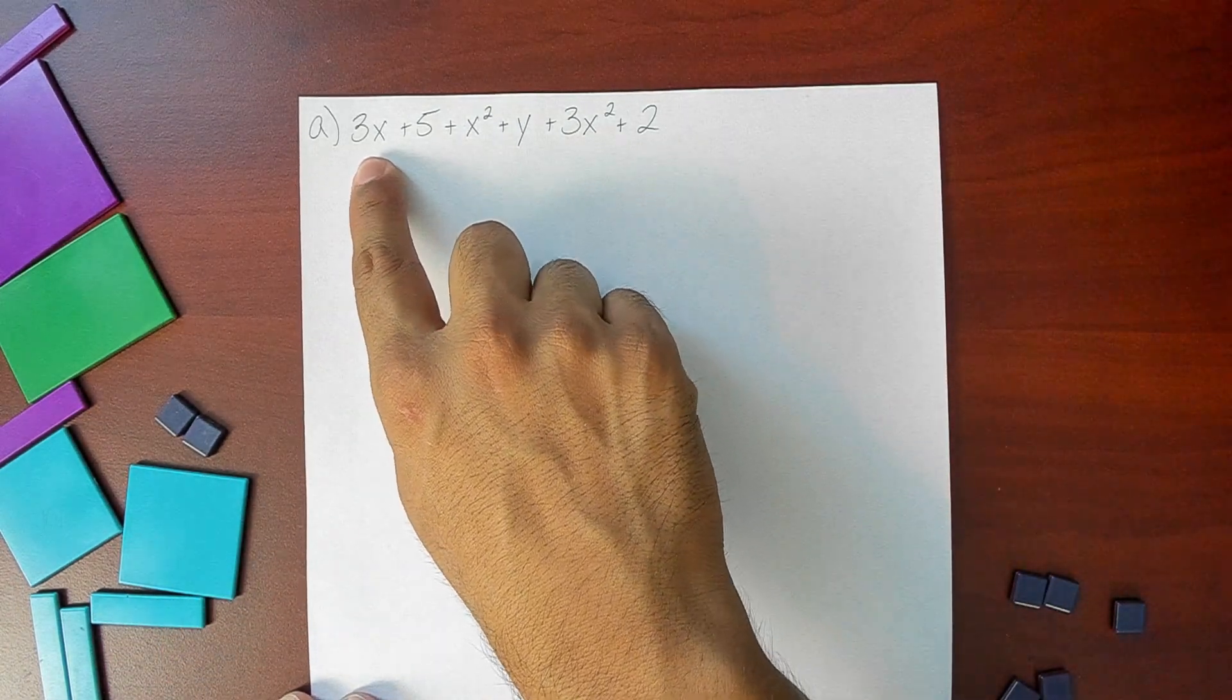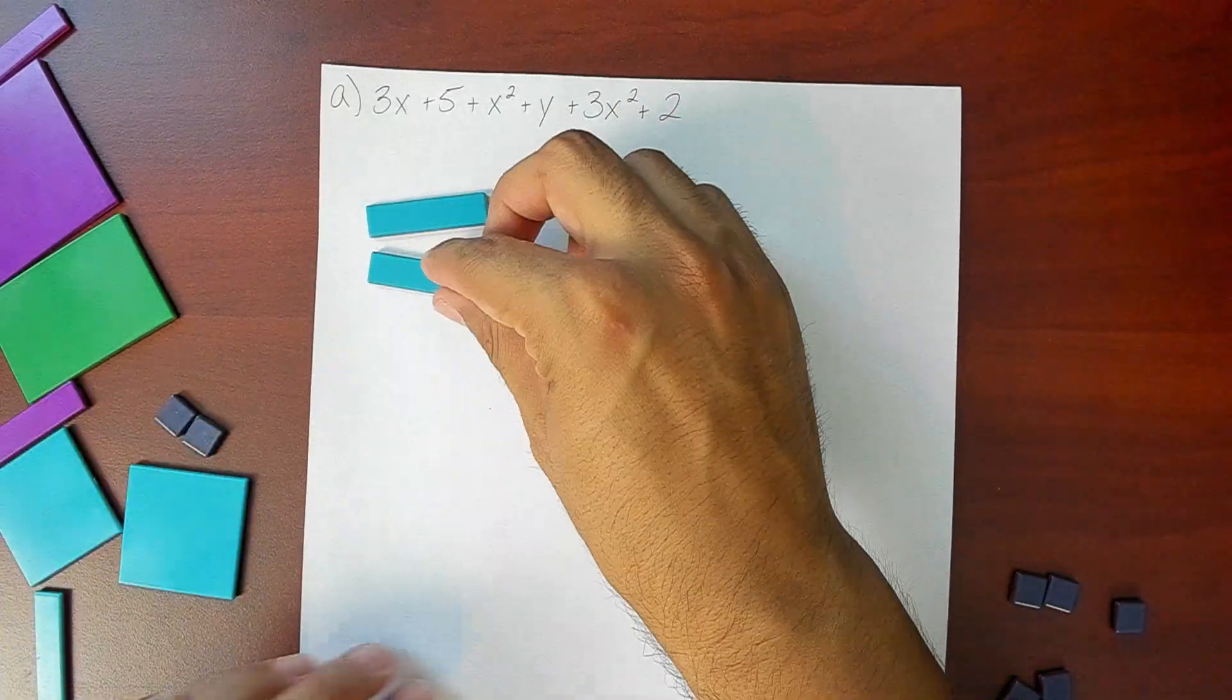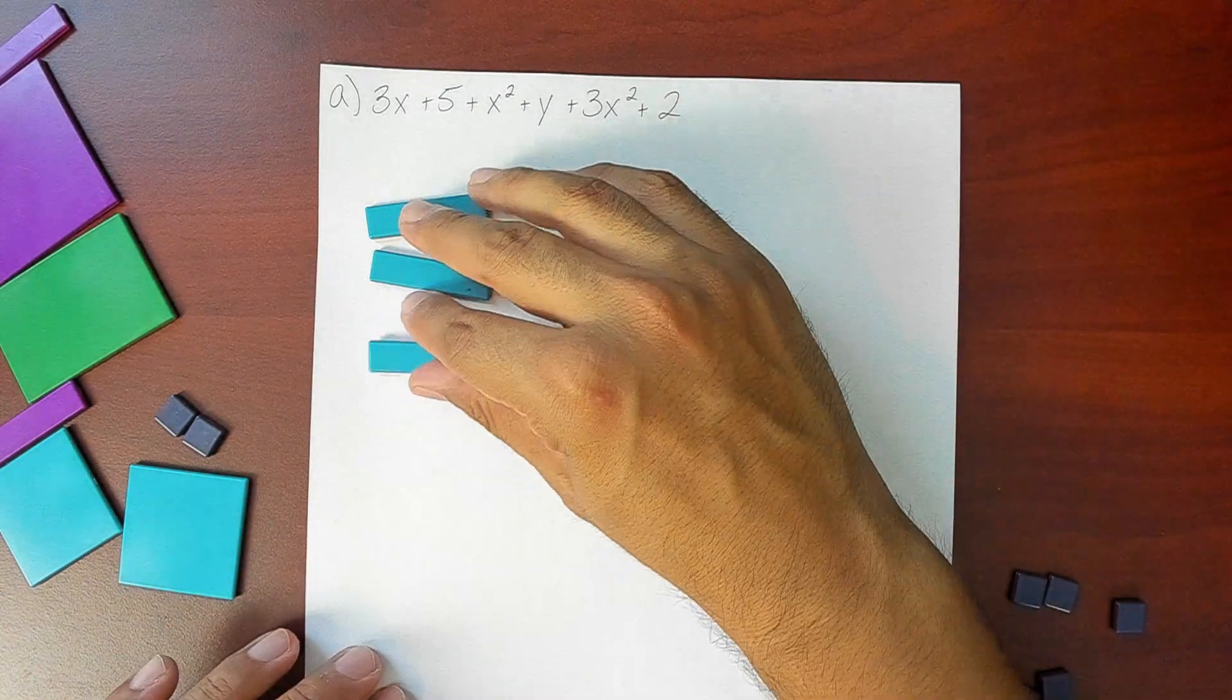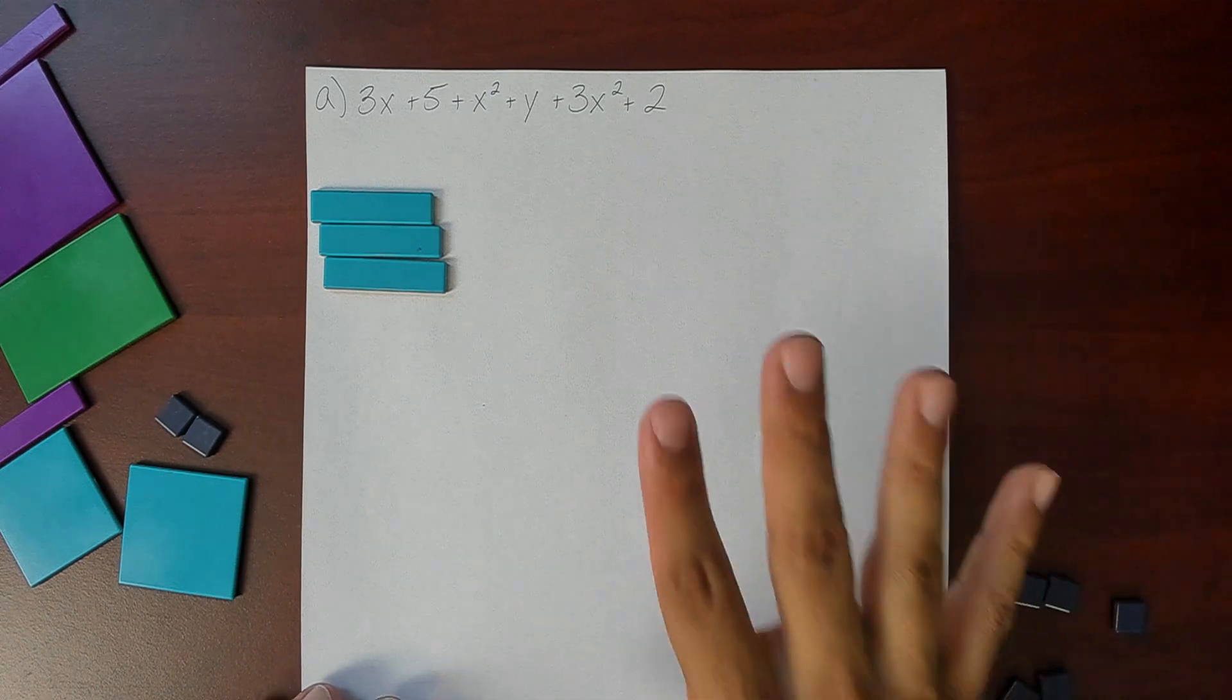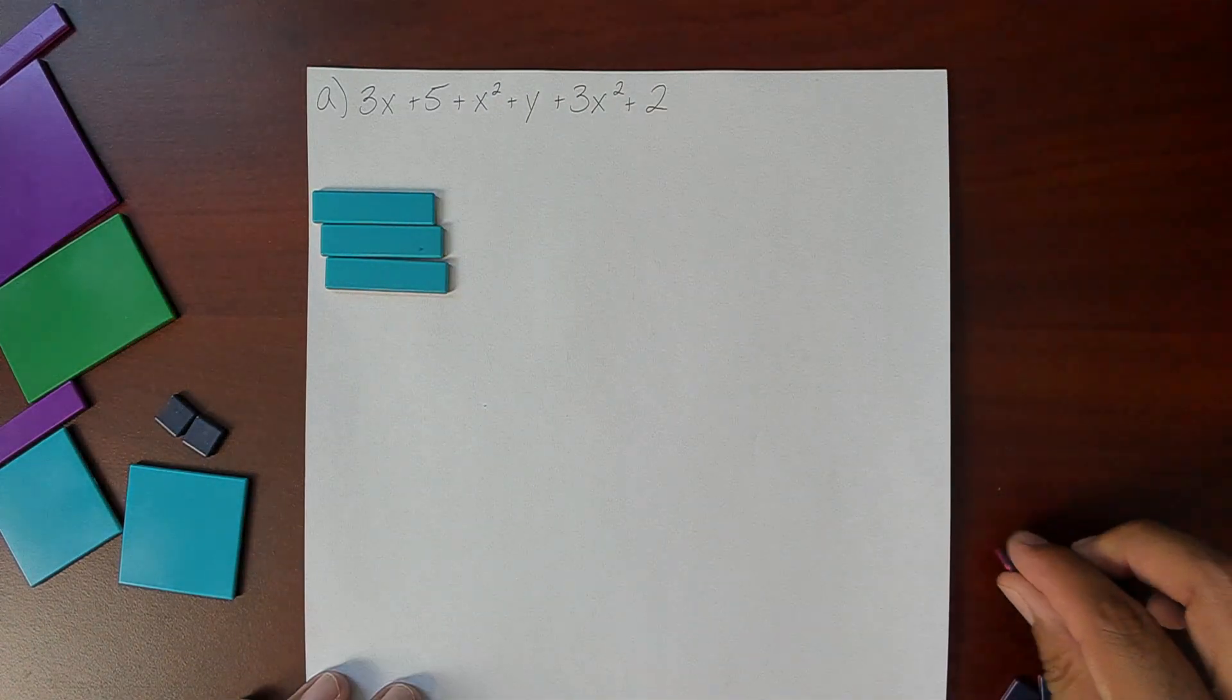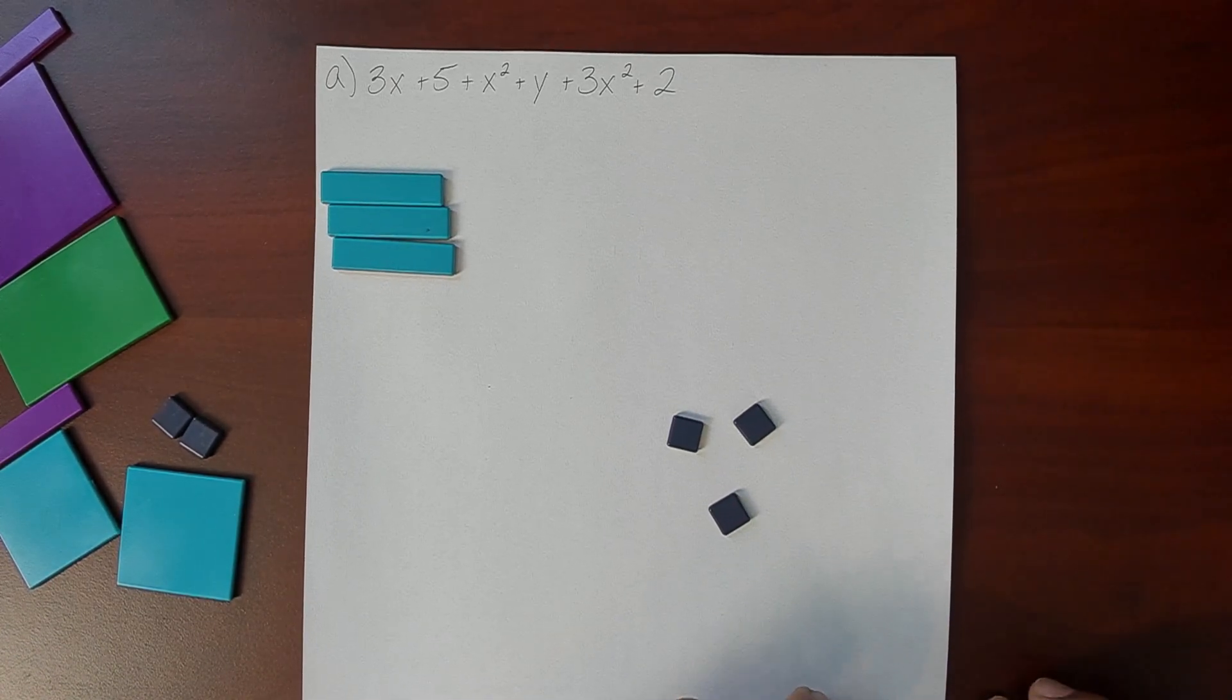So we're going to start with the first term. It says 3x, I need three of my x tiles. Remember the blue rectangles are my x tiles. So there we go, I got 3x right here. It says plus 5, well 5 is going to be our unit tiles. So I need to gather 5 of my unit tiles. I think I have some off to the side here. There we go, there are our five unit tiles right there.